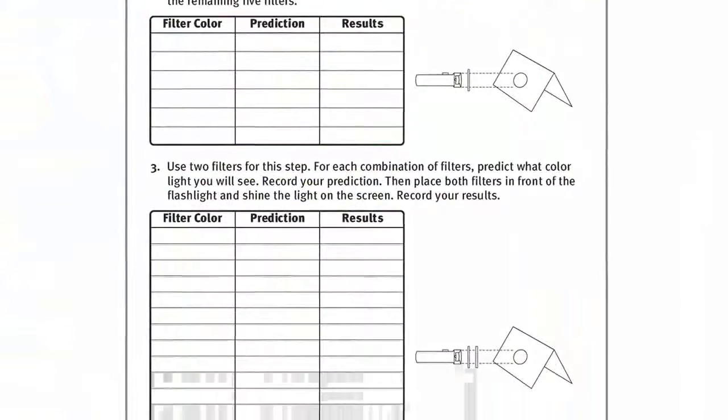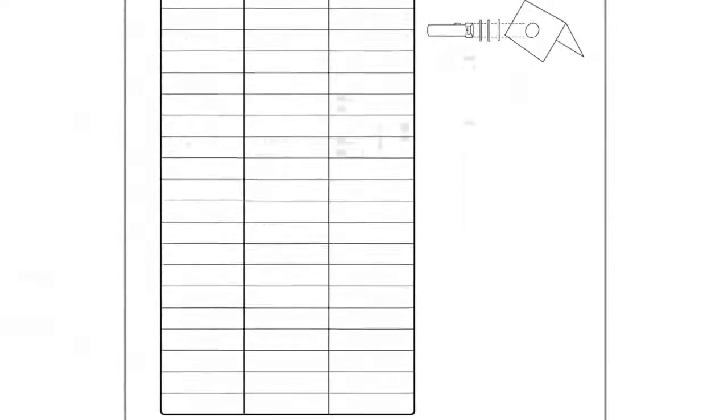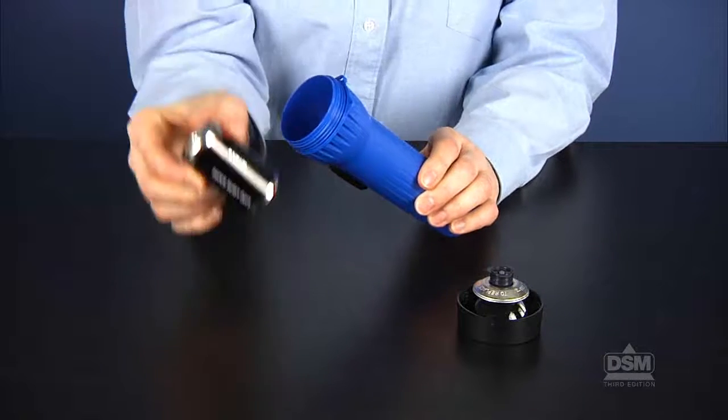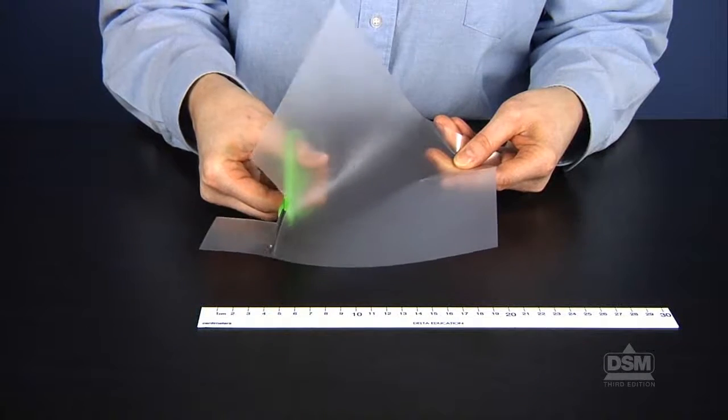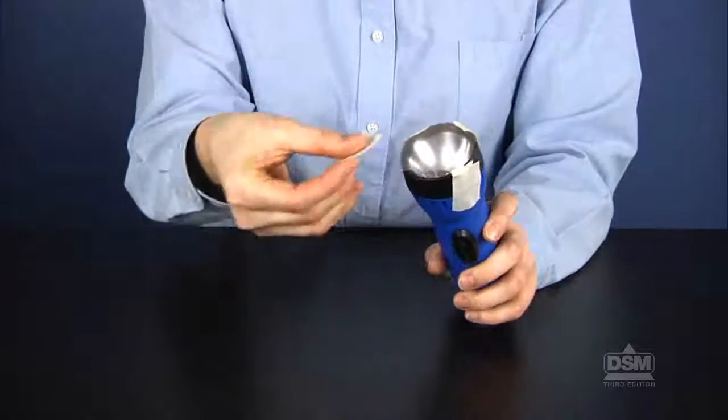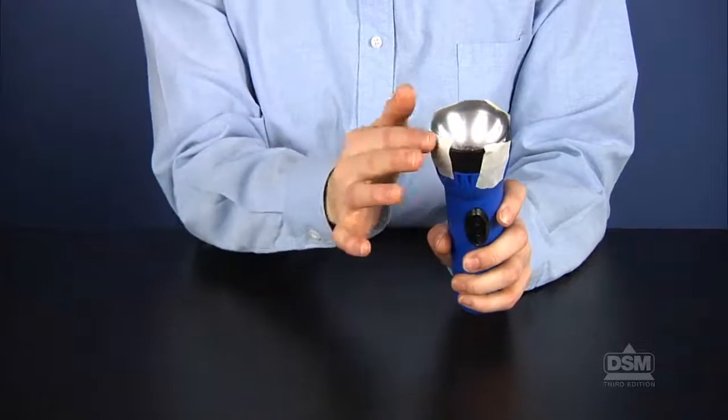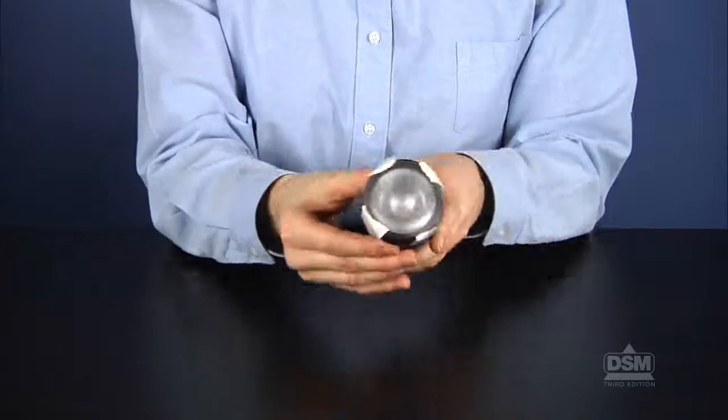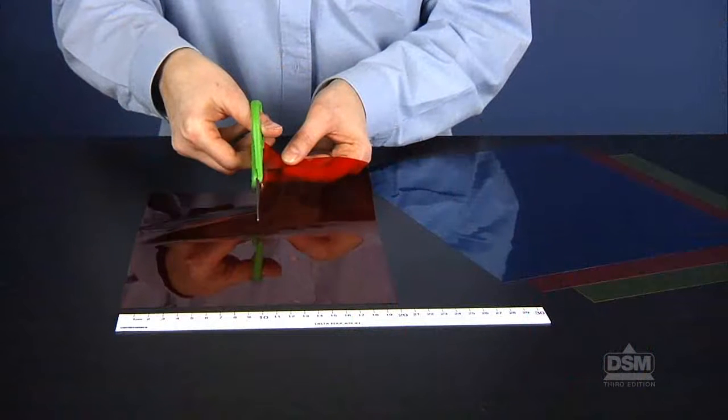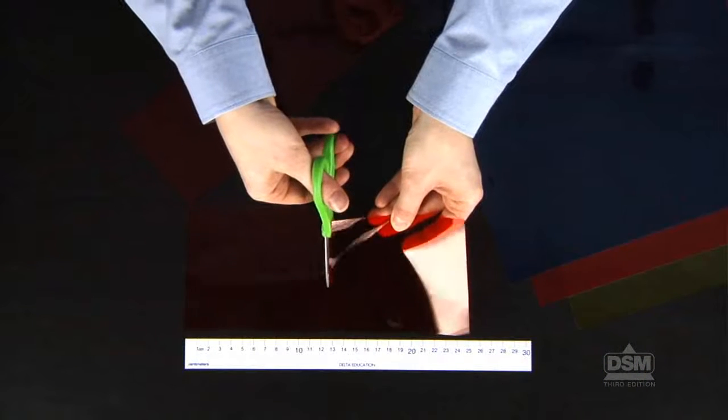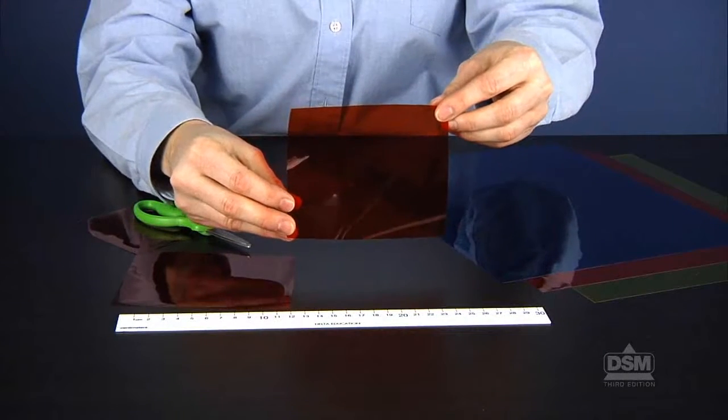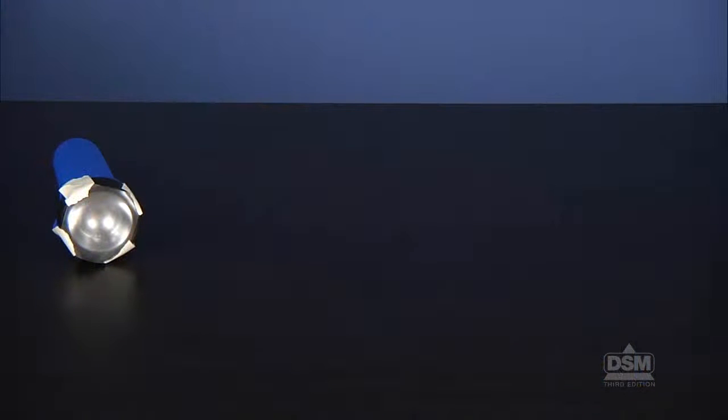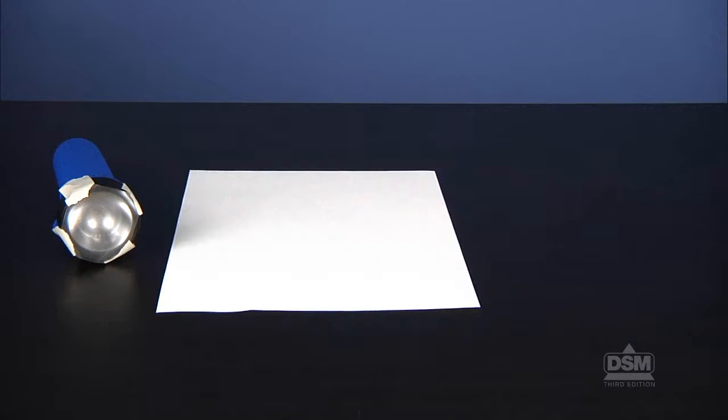To prepare for this activity, make a copy of Activity Sheet 4 Parts A and B for each student. Insert the batteries into the flashlights. Cut the sheets of frosted acetate into 5 cm by 5 cm squares and tape a frosted acetate square over the working end of each flashlight. Then cut the sheets of colored acetate into 10 cm by 12.5 cm pieces, which will now be referred to as color filters. Each team of two will need a flashlight with a piece of frosted acetate, a sheet of white paper, and 6 color filters.